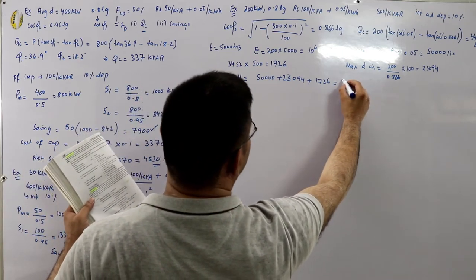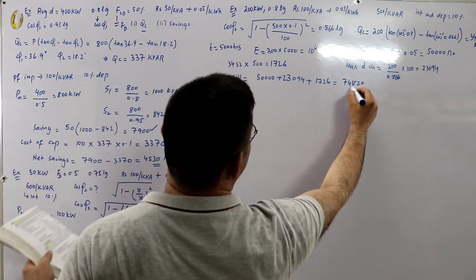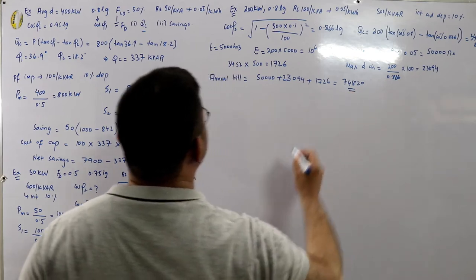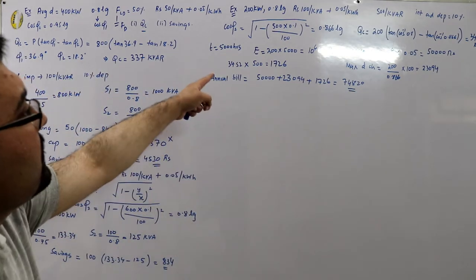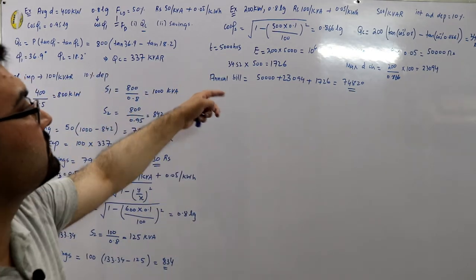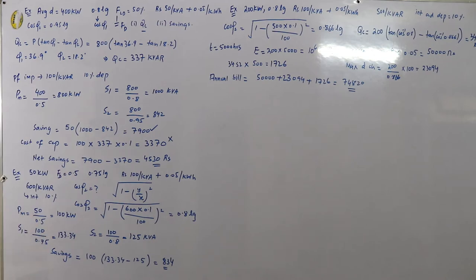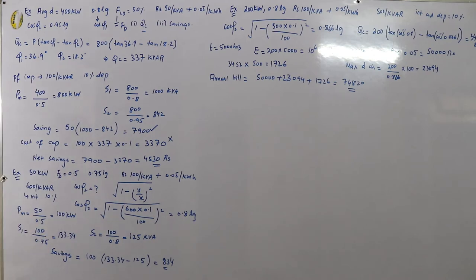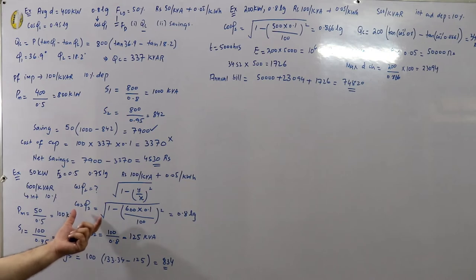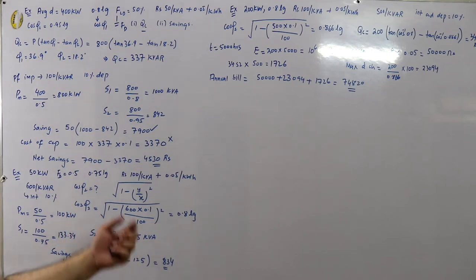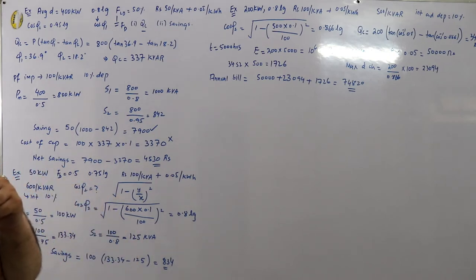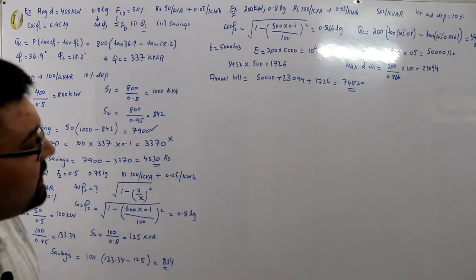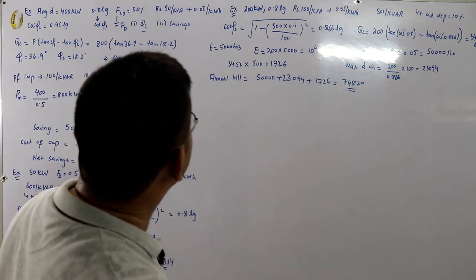I believe the capacitor cost perhaps should not have been included separately here, since when discussing the most economical power factor, those costs are already embedded. But we follow the book's approach here.